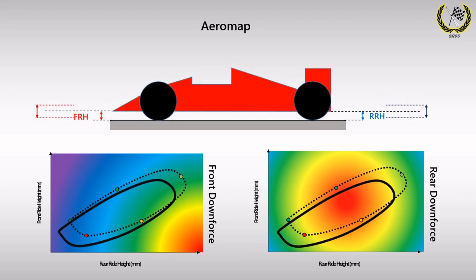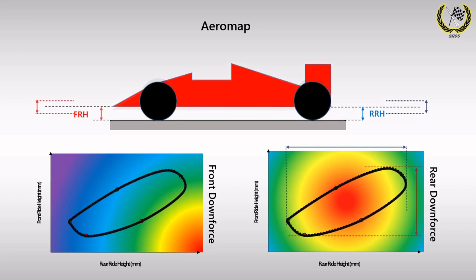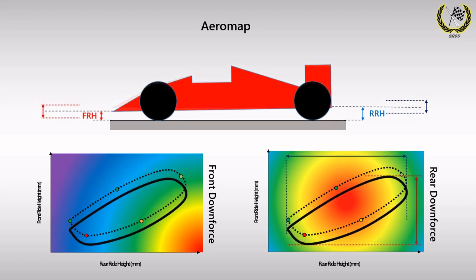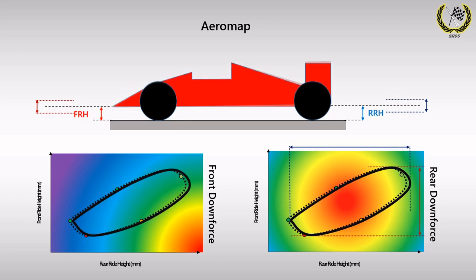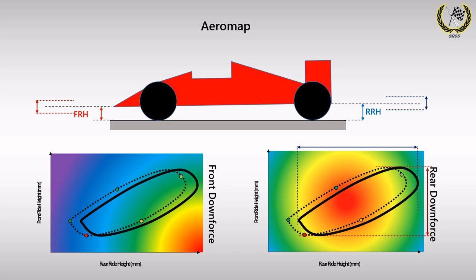As an obverse effect, by uniformly decreasing the ride height of the vehicle, the envelope shifts to the lower left corner of the map with respect to the original reference envelope. Now let's decrease the front ride height but still maintain the rear ride height at its original value. The envelope linearly moves in a negative Y direction on the map while still maintaining its original shape. When the rake angle is increased by only changing the rear ride height, the envelope shifts along the positive X direction as shown here.